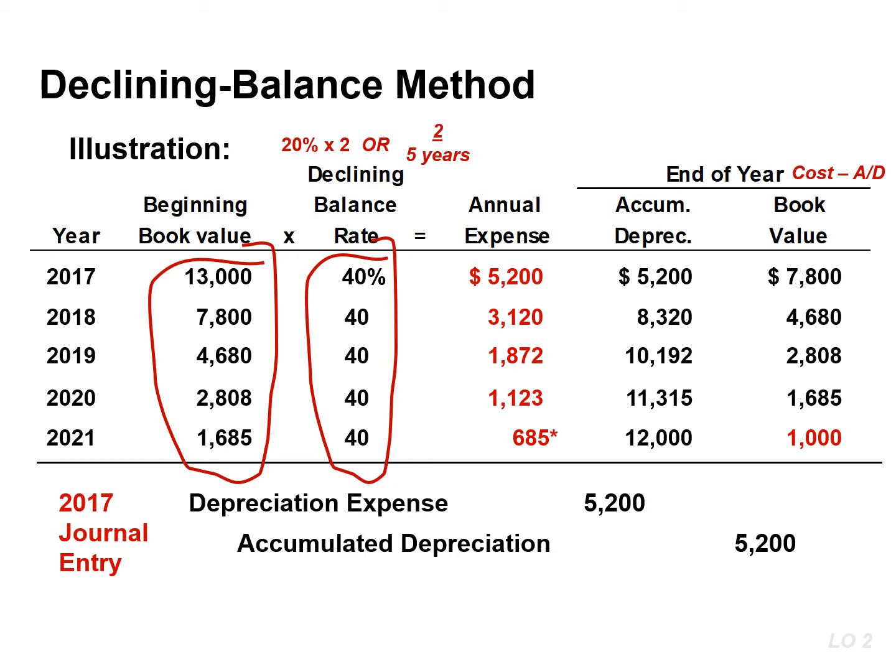This method ignores salvage value when determining the annual depreciation expense, but salvage value limits the total depreciation that can be taken. Depreciation stops when the asset's book value equals its expected salvage value. In the last year of the asset's life, it is sometimes necessary to adjust the amount of depreciation expense so that the book value equals the expected salvage value.